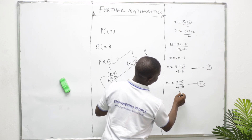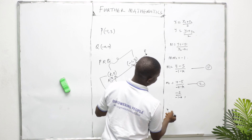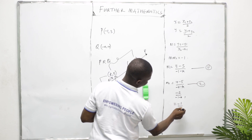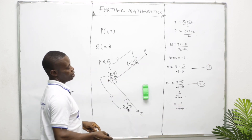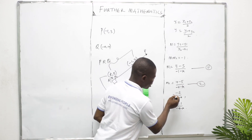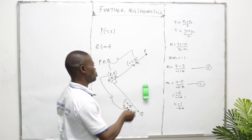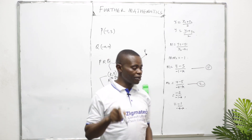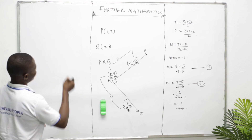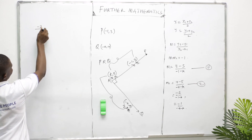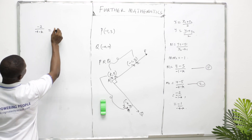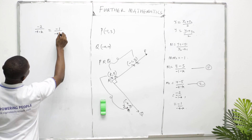Equation 1 gives us −2 / (−1 − K). Equation 2, using Q(−4, 4) and R(K, 5), gives (4 − 5) / (−4 − K) = −1 / (−4 − K). Since both are gradients and they must satisfy M1 × M2 = −1, we equate: −2/(−1 − K) = −1/(−4 − K).